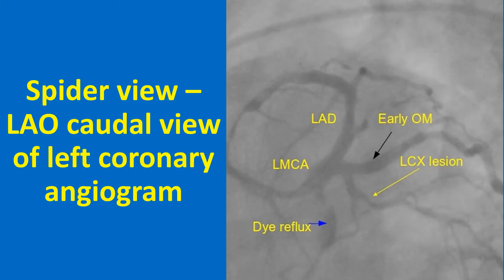In the spider view, LMCA is the left main coronary artery, LCX is the left circumflex coronary artery with a lesion marked by a yellow arrow, LAD is the left anterior descending coronary artery, and early OM is the early obtuse marginal branch of the LCX. From the LMCA bifurcation, the LAD is seen towards the catheter side and the LCX towards the opposite side. Dye or contrast reflux into the aorta from the LMCA is also seen.